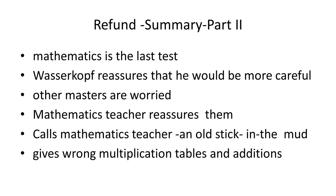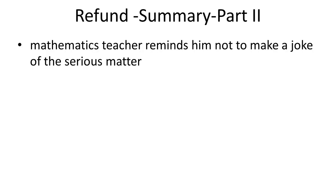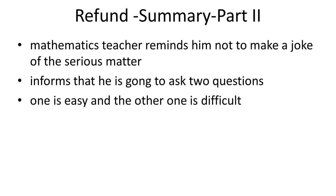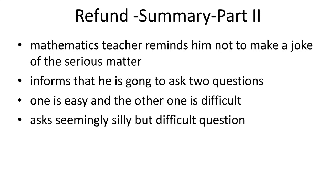When Vesokov comes in front of him, he calls the maths teacher an old stick in the mud. Vesokov also gives wrong multiplication tables and additions so that the maths teacher gets angry with him. But the maths teacher was cool and reminds him not to make a joke of the serious matter. The maths teacher tells Vesokov that he is going to ask two questions — the first one is easy and the second one is difficult — and the first question was about the speed of light.